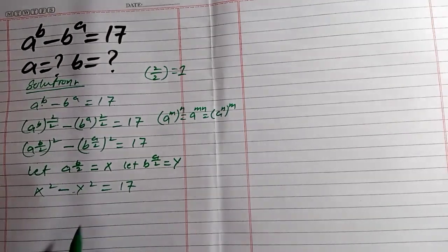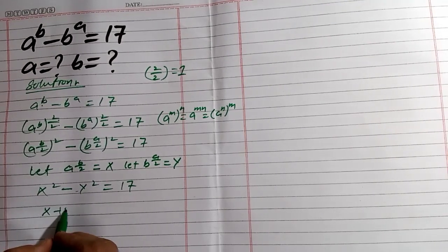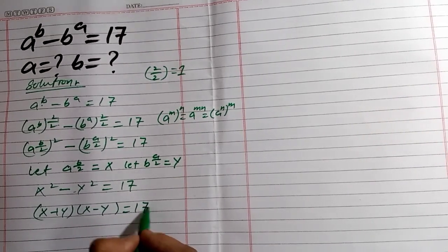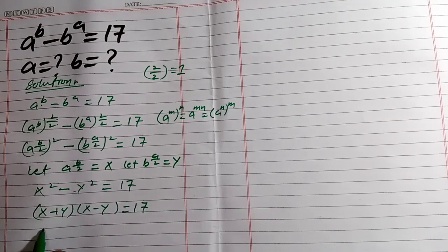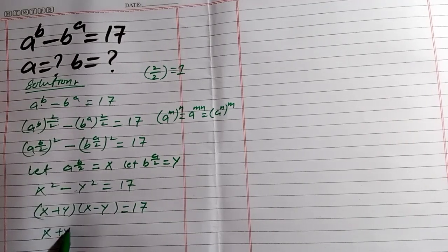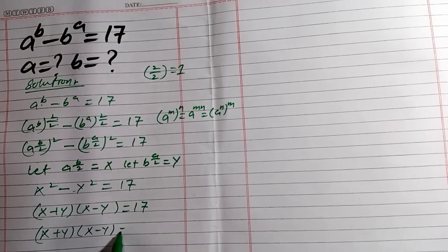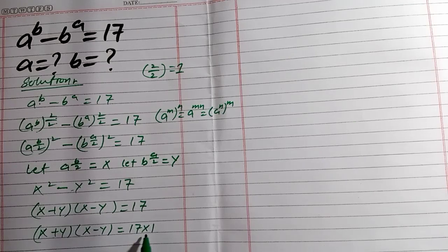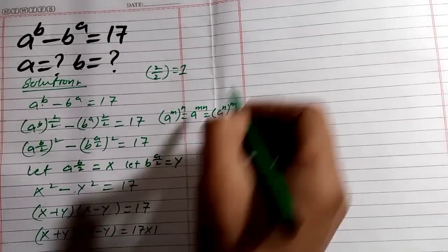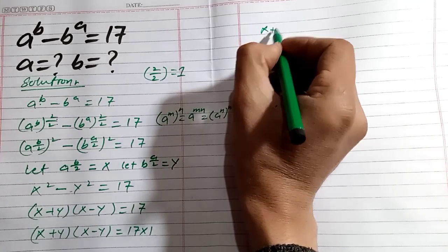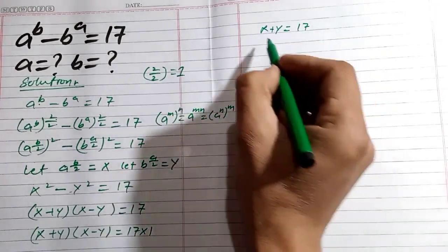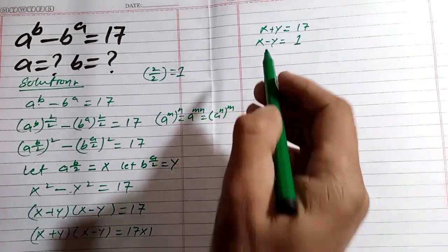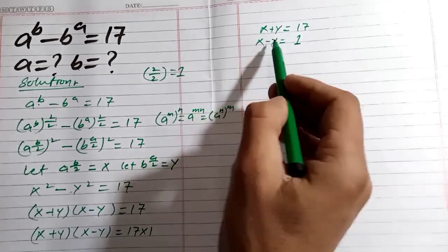We know that x squared minus y squared equals (x + y)(x − y), which equals 17. We can write 17 as 17 multiplied by 1, which is also equal to 17. Comparing these two factors, we get x + y = 17 and x − y = 1.